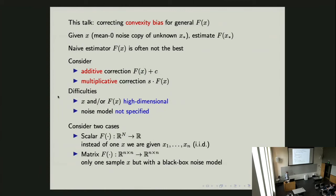In this talk I'm going to consider two kinds of corrections. One is called additive correction: take f(x) and add or subtract a constant, like what we did for the quadratic function x². The other is a multiplicative correction: multiply the whole thing by a scalar s, like what we did for the exponential function. For the general problem there are two sources of difficulty: first, x could be high dimensional — a long vector, matrix, or tensor — and the output could also be high dimensional. Second, the noise model may not be known.